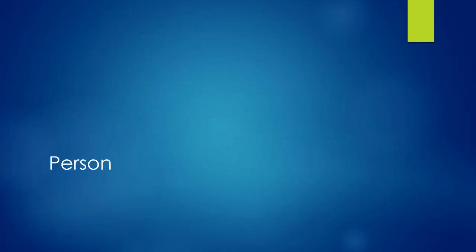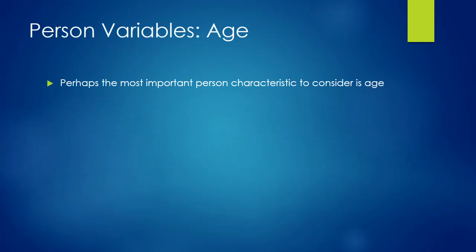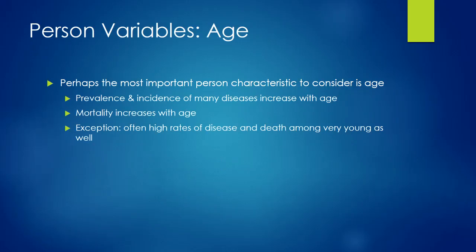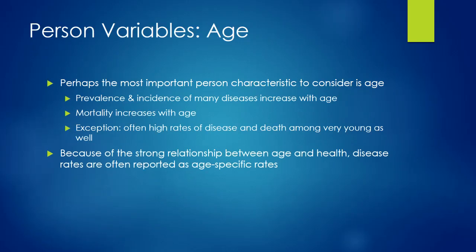Let's talk about the person, place, and time variables, starting with person. Age is probably the most important person characteristic. Age adjusting is a common practice because age is associated with so much disease incidence, and we want to account for differences in age distributions across populations when comparing disease rates. Although mortality and disease risk generally increases with age, we also see high rates in very young children — a peak at early ages that declines before increasing again.